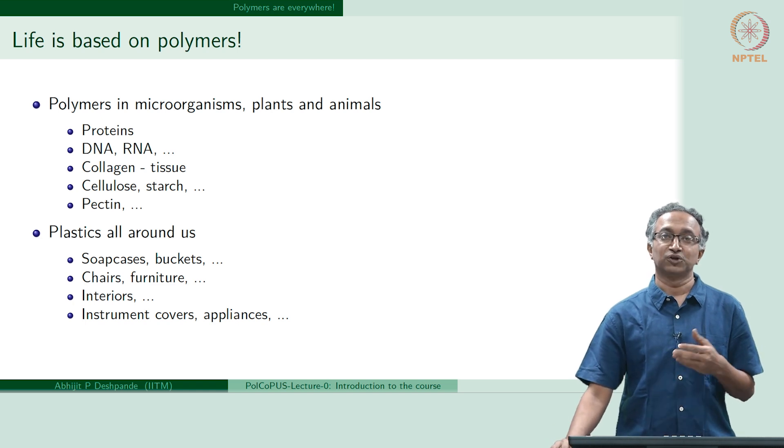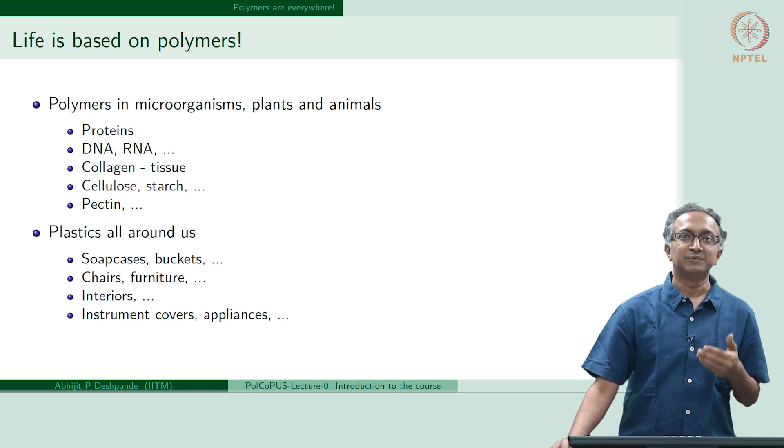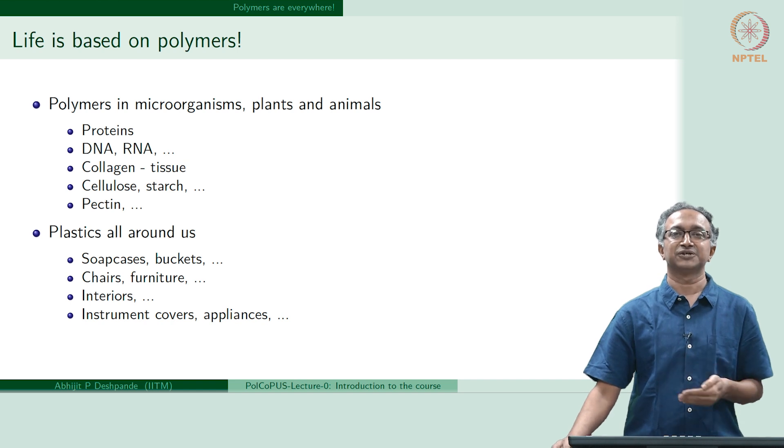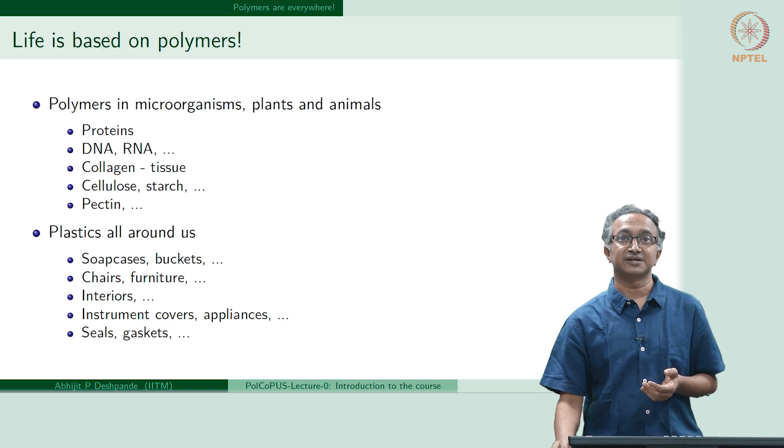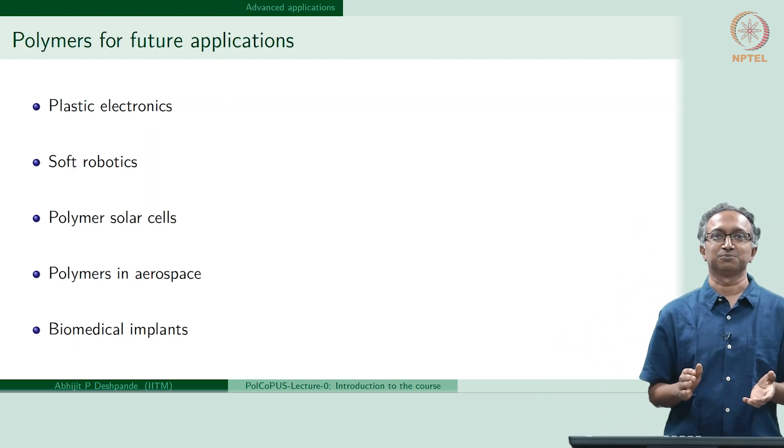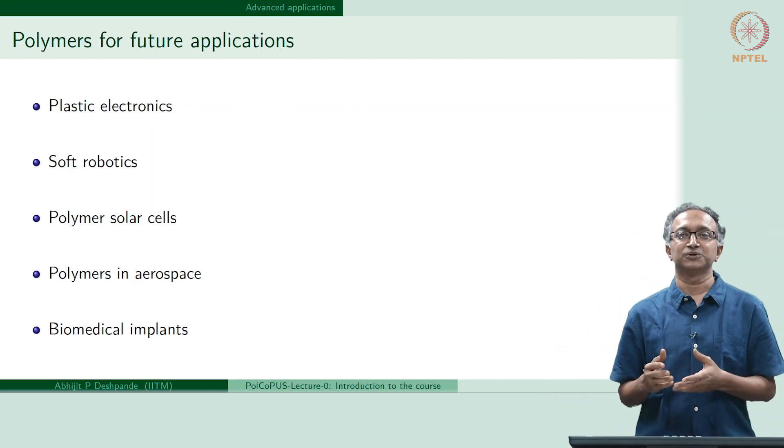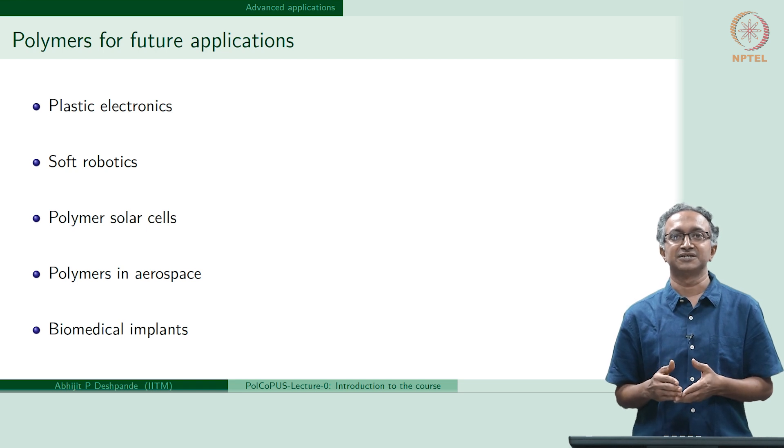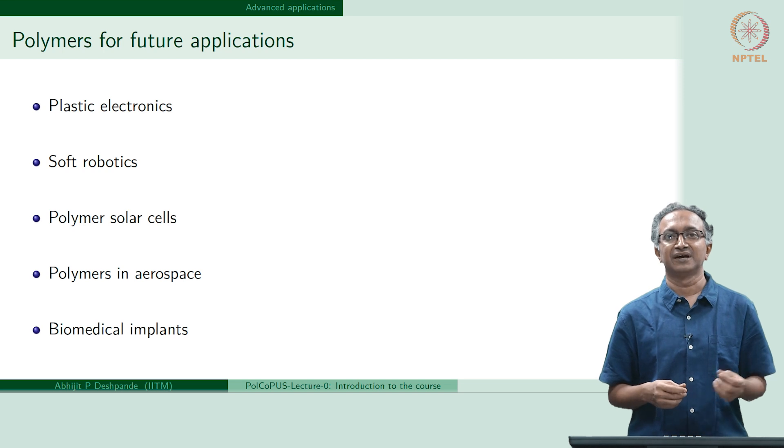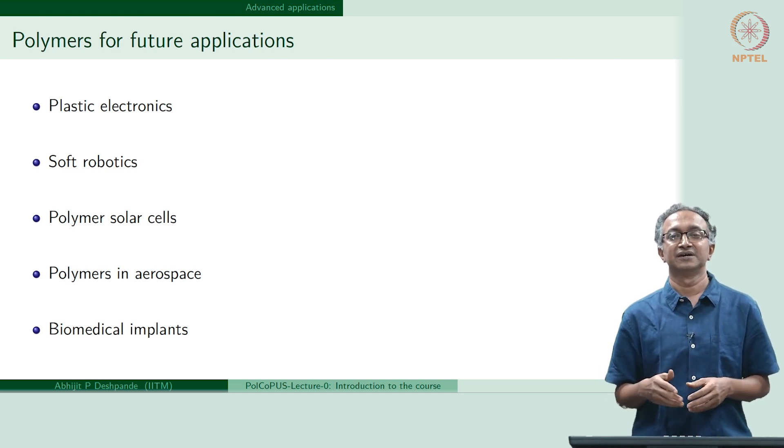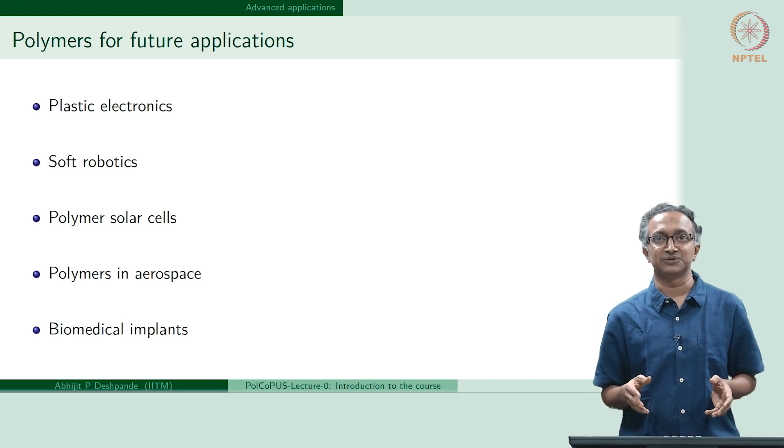Of course, not just related to familiarity of plastics and polymers all around us, the next aspect is also related to futuristic applications of these polymers. When we want to use polymers in applications where you might not have heard of them before - for example, when we think of a chip, an electronic chip, we think of silicon, but these days we can make polymer transistors also. Similarly, solar cells can also be made out of polymers.